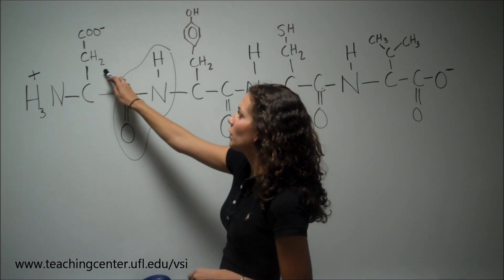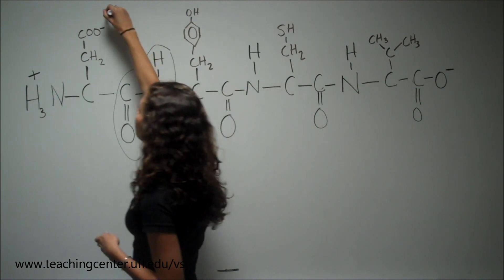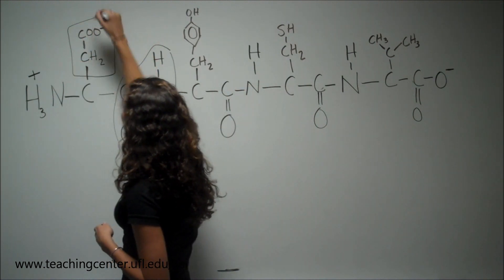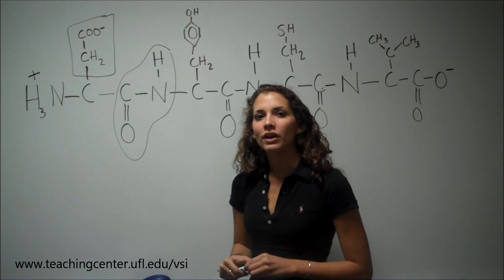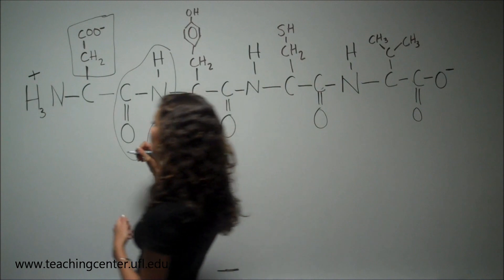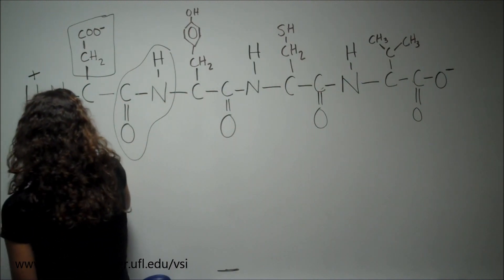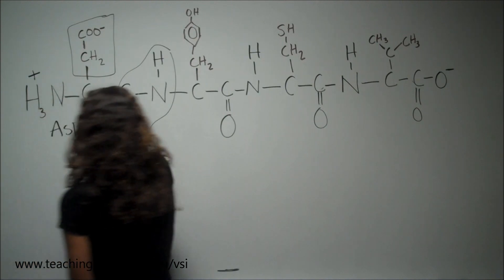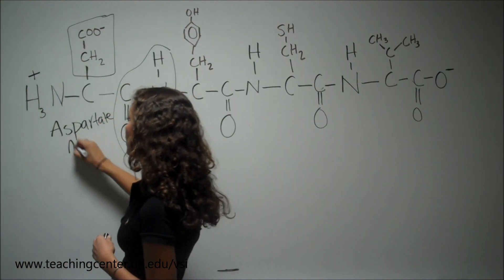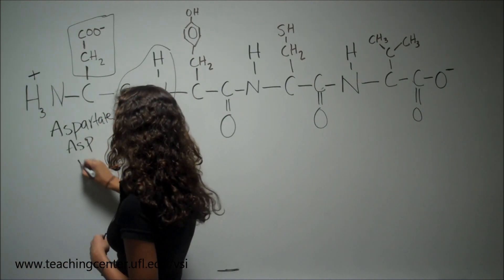So if we look at the first one, we see this is the R group, and this represents aspartate, but remember that on the exam it could be listed as aspartate or by one of its codes, so ASP or D.